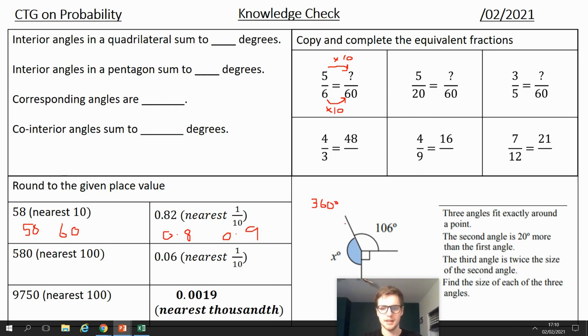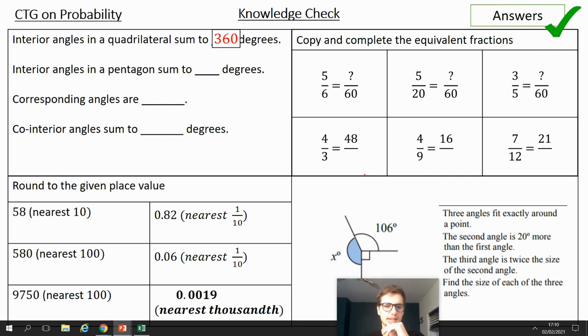Okay, I'm about to go through the answers, so can I have green pens in the air? 5, 4, 3, 2, 1, go! Ticking and fixing. Interior angles in a quadrilateral sum to 360 degrees. Ticking and fixing. Interior angles in a pentagon, pent meaning 5, a 5-sided polygon sum to 540 degrees. Corresponding angles are equal. Cointerior angles sum to 180 degrees.